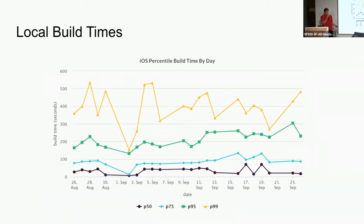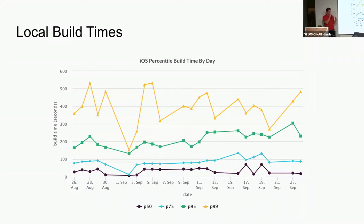Another thing we instrumented was local build times. We had a quarter-long project where two engineers on Android and iOS were trying to improve local build times. It was really hard to get any signal out of the data because it's so wildly variable. One thing I heard from someone at Facebook recently is that you could actually target the outliers — the outliers are where the pain points are for developers. If you improve at P50, people won't notice that much; if you improve the P99 time, people will actually notice more.